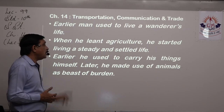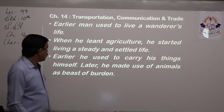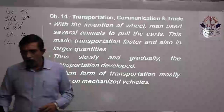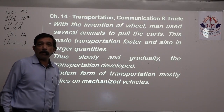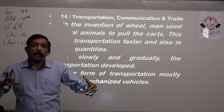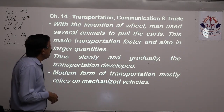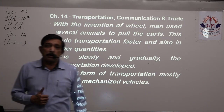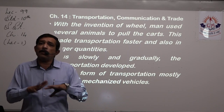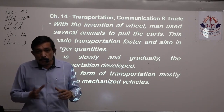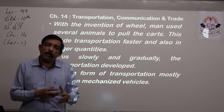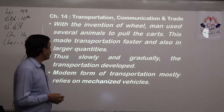With the invention of wheel and axle — making two wheels and joining them with an axle to put a cart on — man used several animals to pull the carts. There could be a donkey cart, horse cart, camel cart, or buffalo cart. Depending on which domesticated animals were available in a region, human beings harnessed that animal power to draw their carts. This made transportation faster and also allowed goods to be carried in larger quantities — instead of needing multiple animals each carrying a few bags, one cart could carry ten bags.